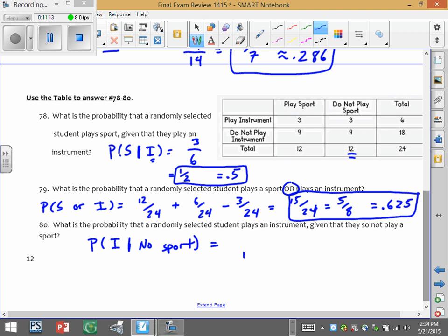And how many of those play an instrument? 3 out of the 12, which will simplify to 1 fourth or 0.25. So all three of those would be legit answers for number 80. So let's go.